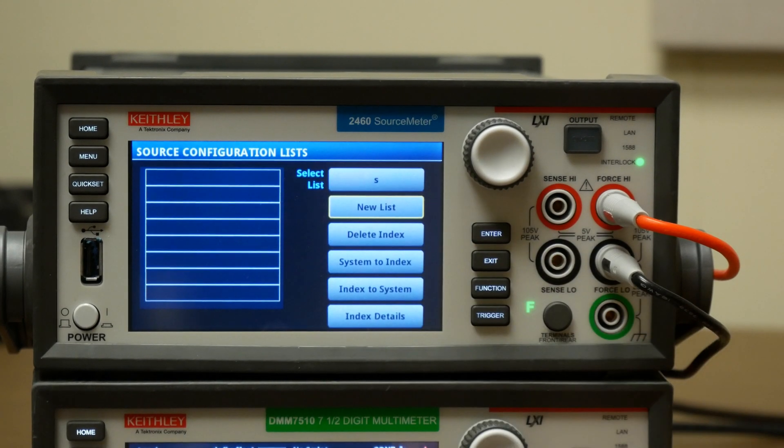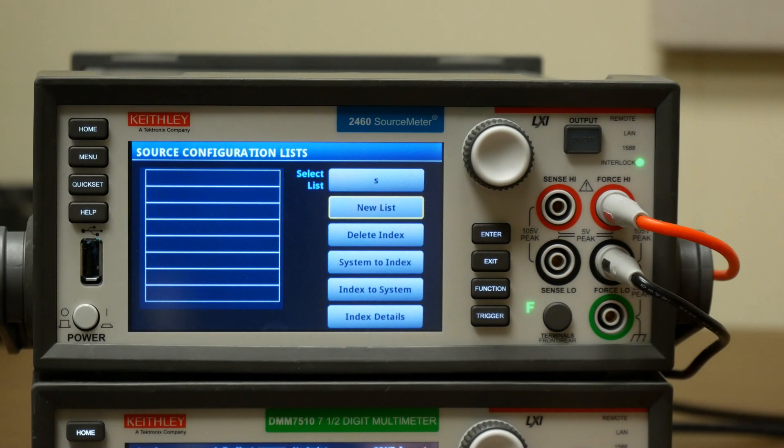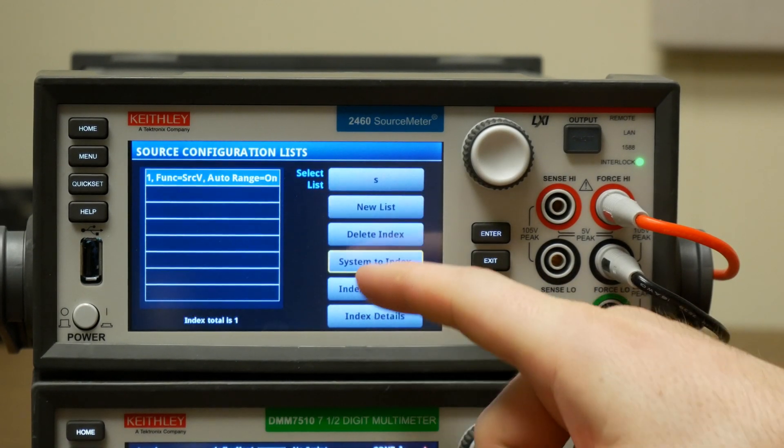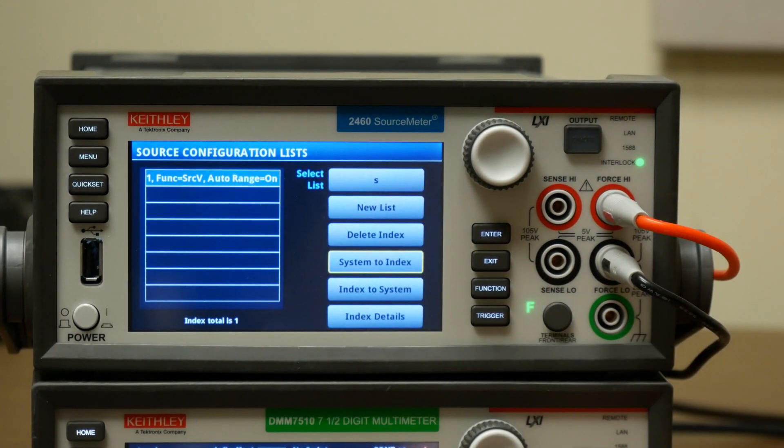And now we have a config list. So we want to put our first 5 volt source into the configuration list by pressing system to index. Now it's saving all of the source settings in index 1 of the configuration list.